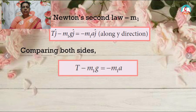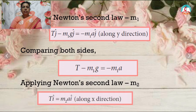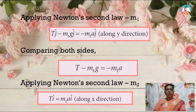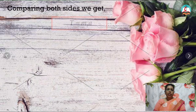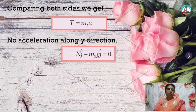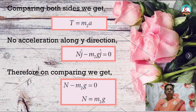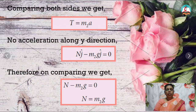Looking at the free body diagram for both masses: applying Newton's law for mass M1 along the y direction — T j-cap minus M1g j-cap equals minus M1a j-cap. Comparing both sides: T minus M1g equals minus M1a. Applying Newton's second law for mass M2 along the x direction only (no movement in y direction): T i-cap equals M2a i-cap. Comparing: T equals M2 times A. Since there is no acceleration along y direction: N j-cap minus M2g j-cap equals zero, so N equals M2g.